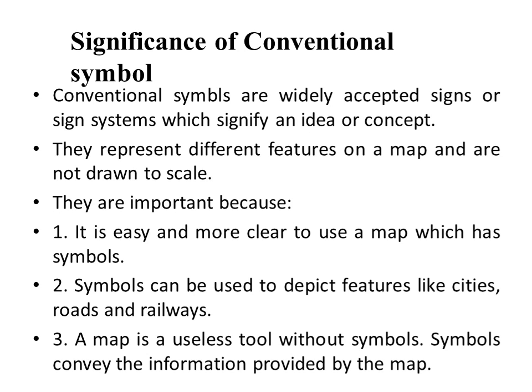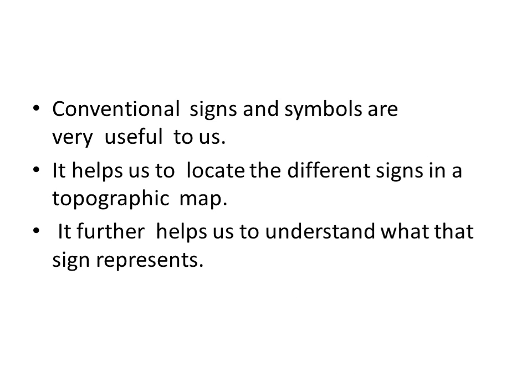Next we see the significance of conventional symbols. Conventional symbols are widely accepted signs or sign systems which signify an idea or concept. They represent different features on a map and are not drawn to scale. They are important because it is easier and clearer to use a map which has symbols. Symbols can be used to depict features like cities, roads, and railways. A map is a useless tool without symbols. Symbols convey the information provided by the map, and convention signs help us locate different features in a topographic map and understand what each sign represents.